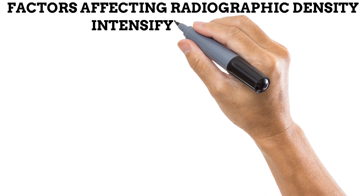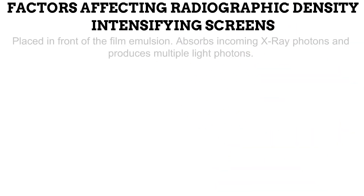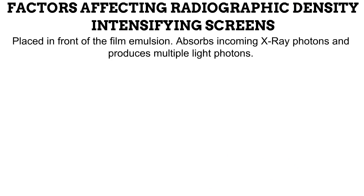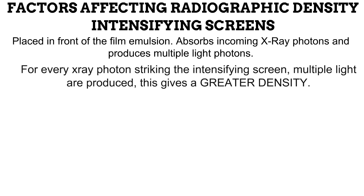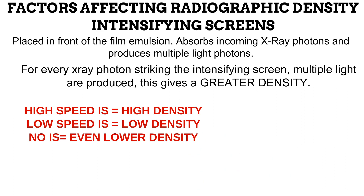The next factor is the use of intensifying screens, which applies only to film screen radiography. Intensifying screens are placed in front of radiographic films and have a multiplier effect: for every single X-ray photon that strikes the screen, it generates multiple light photons. Since X-ray films are sensitive to light photons, this produces a great radiographic density. Intensifying screens also have a property called speed — the efficiency of the screen in converting X-ray photons to light. A high-speed intensifying screen produces higher radiographic density, while low-speed screens give lower density.